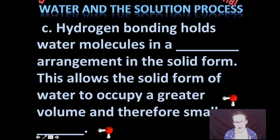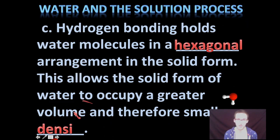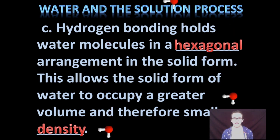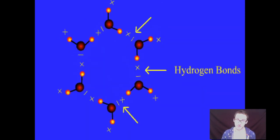And the third property that is directly related to the hydrogen bonding that occurs in between water molecules is the fact that water is actually less dense in the solid form than it is in the liquid form. This is due to the fact that those hydrogen bonds hold the water molecules in a hexagonal arrangement in the solid form, actually increasing its volume and therefore making it slightly less dense in the solid form. So check out this animation.